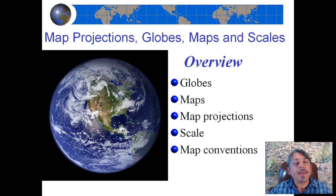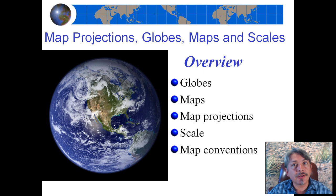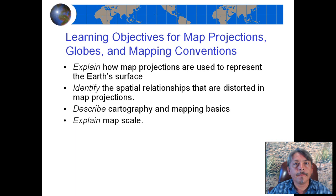In this lesson, we will detail what a globe is and the difference between a globe and a map, which is usually a two-dimensional thing. Map projections are the method by which we get the planet Earth, which is a geoid, to display correctly on a globe and especially on a map. We will discuss scale, which is basically a ratio between the real world and something on a map, and also map conventions — basically the rules of what it is to make a map and what a map should have.